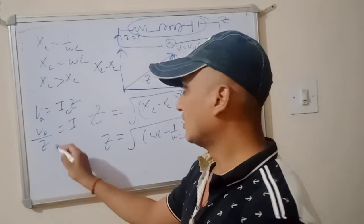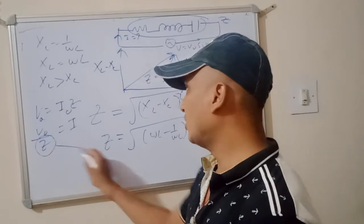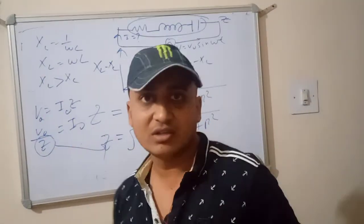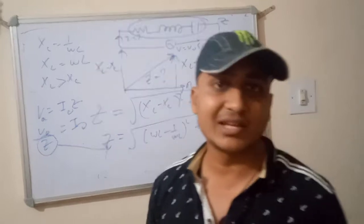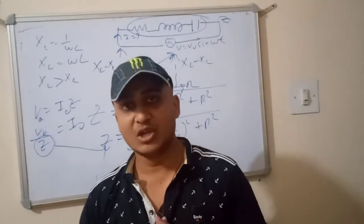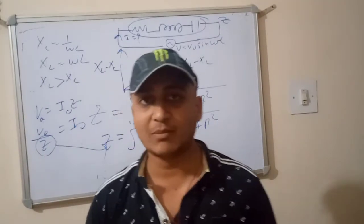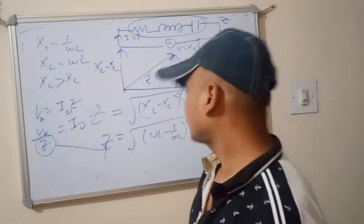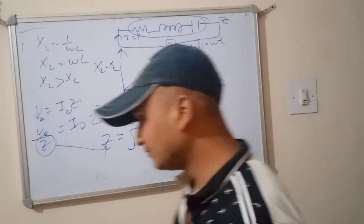Just put the value of Z and we get I-naught, the maximum current in the circuit. So this was about the impedance of an RLC circuit.